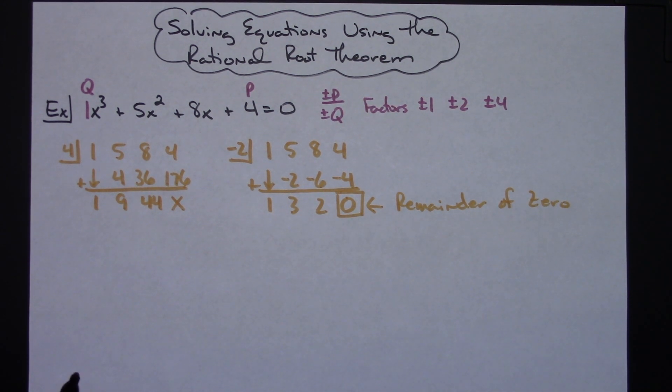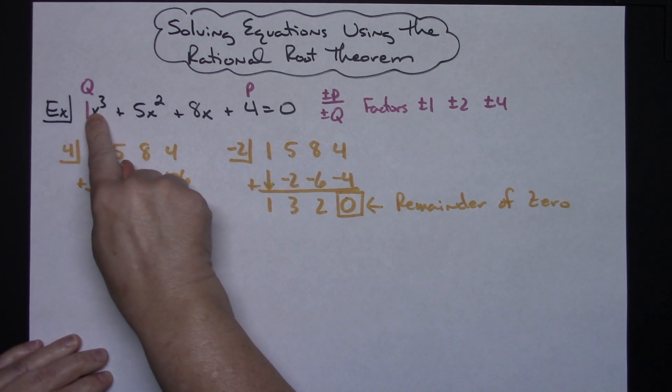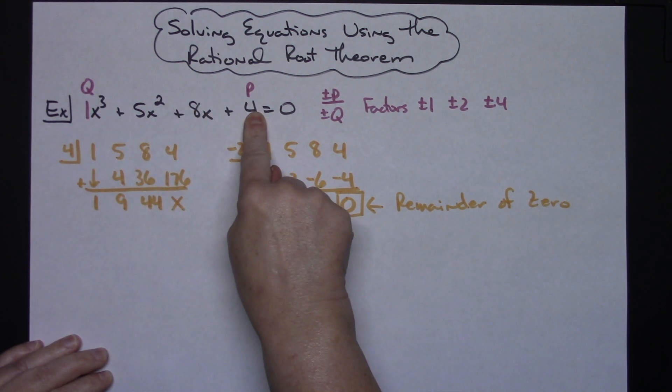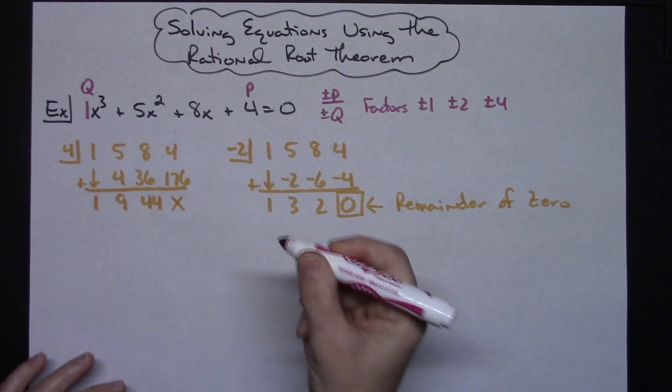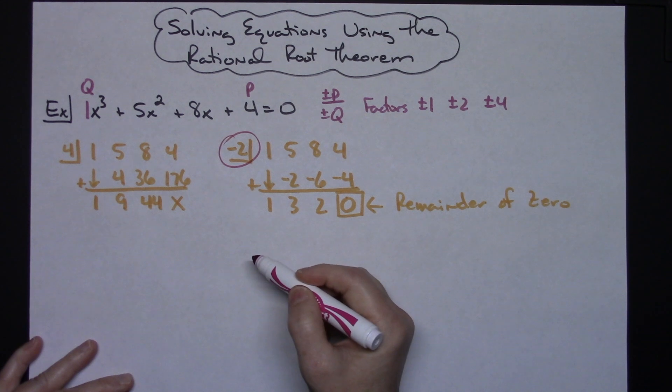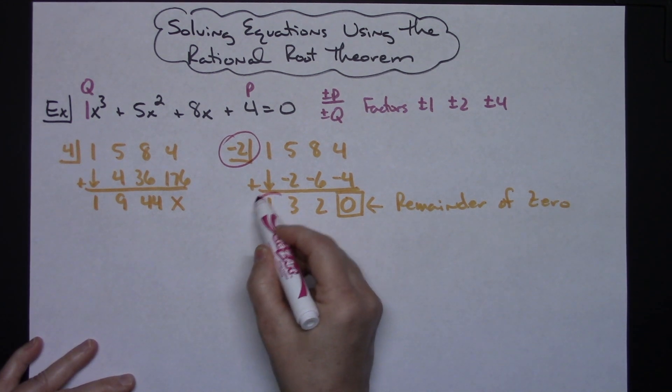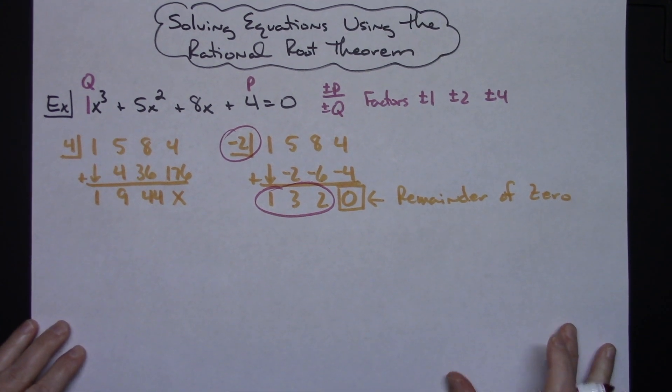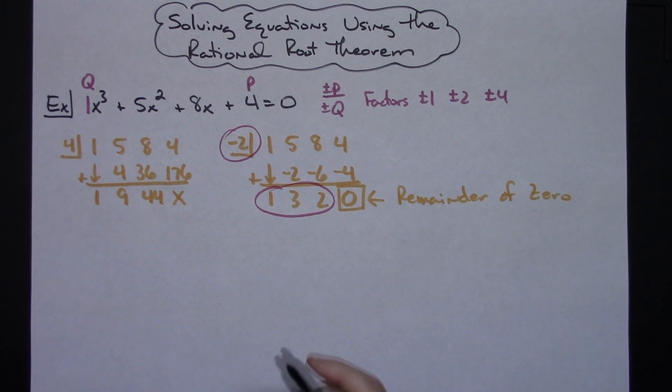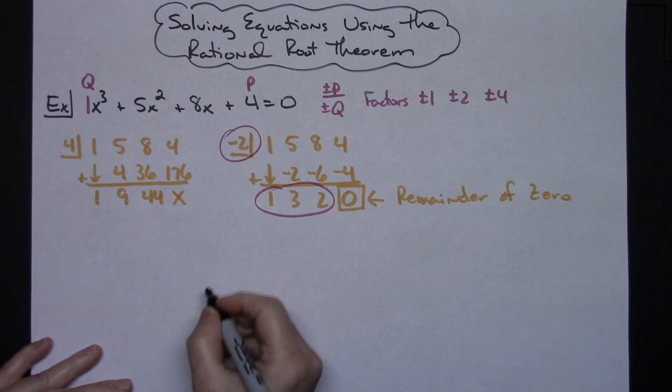But once you do that then what this does is it takes this four terms and gives you the factored form of that because you're going to use this to come up with a factor because you know that's a factor and you know this is what's left over. Now let's come and actually write all of this out.